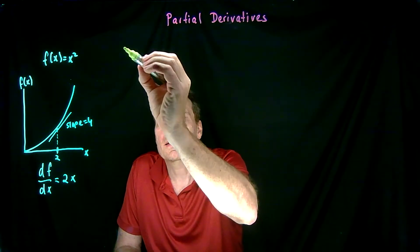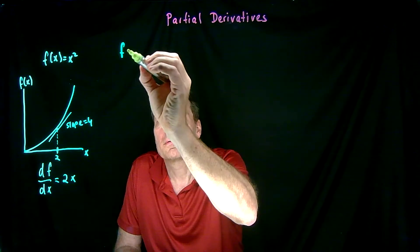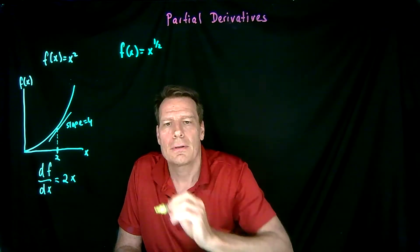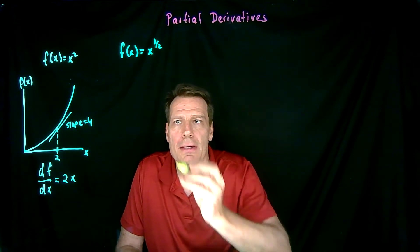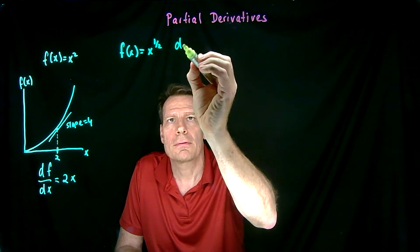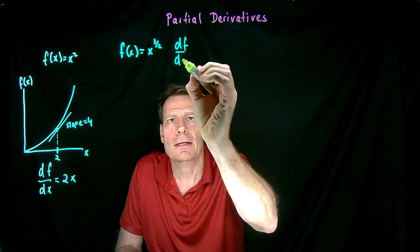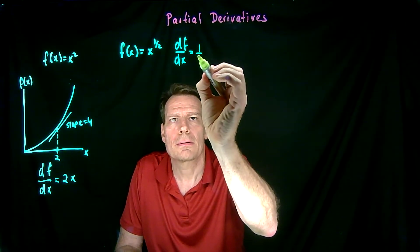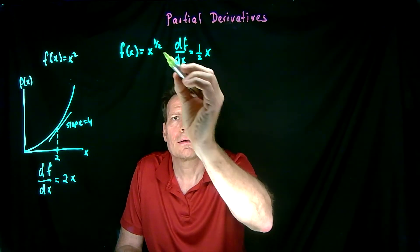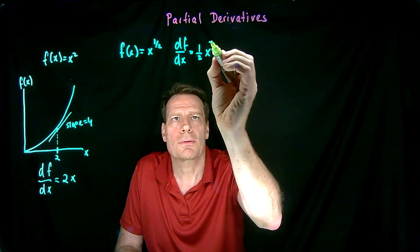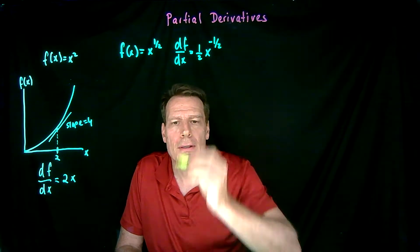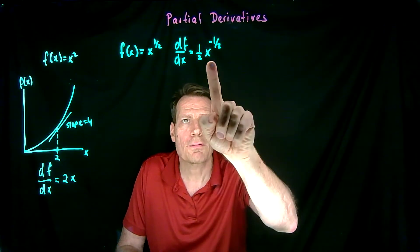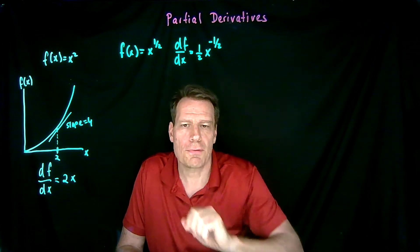Or if you have a function like f of x equal to x to the 1 half, we do the same thing. The derivative of f with respect to x would simply be the exponent times x, and subtract 1 from this exponent, we get minus 1 half. And once again, that'll tell us for any value of x what the slope of this function is.